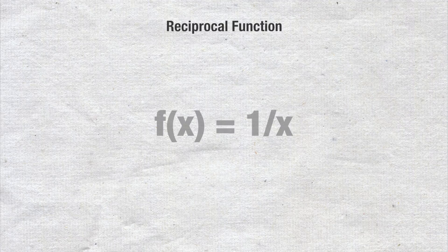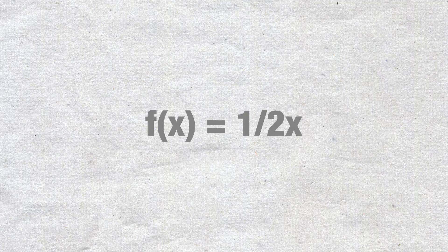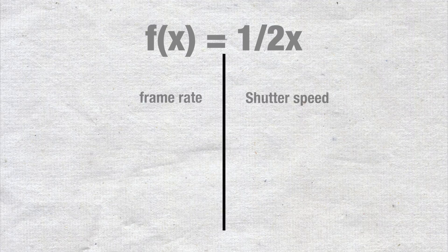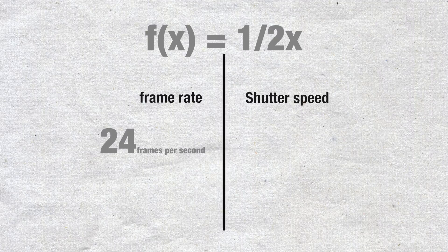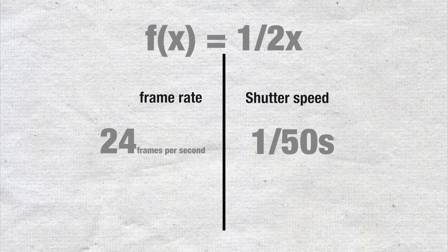In terms of video, you always want your shutter speed to be the reciprocal of double your frame rate to get a cinematic look with just the right amount of motion blur. What does that mean? Well, the reciprocal function is as follows: f(x) = 1/x. In our case, it will be equal to 1 over 2x. So let the left-hand side equal our frame rate and the right-hand side our shutter speed. If your frame rate is 24p or 24 frames per second, your shutter speed should be 1/48th of a second. But since that's not commonly available on consumer cameras, you can round that off to 1/50th of a second.